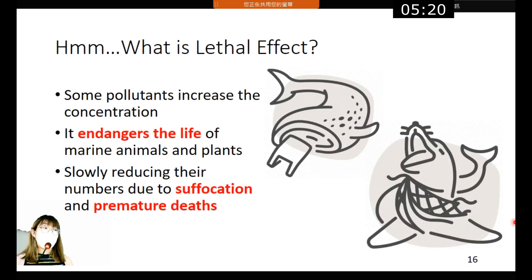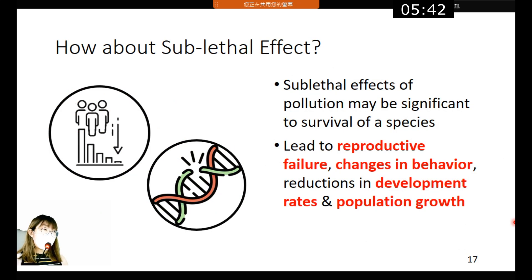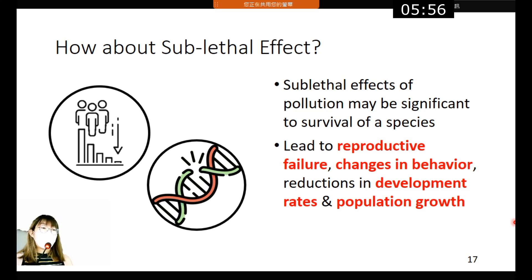What are lethal effects? Some pollutants such as residential waste or excess carbon dioxide are increasing in concentration in the ocean, endangering marine animals and plants by slowly reducing their numbers through suffocation and premature deaths. Sub-lethal effects are quite different — the outcomes of sub-lethal effects include reproductive failure, changes in behavior, and reduction in development rates and population growth.